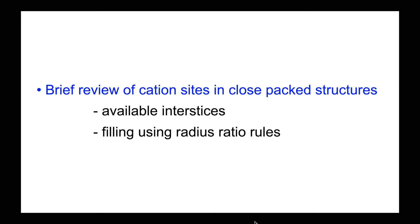We'll begin with a brief overview of the basic principles of ionic structures, and talk about the available interstices in a close-packed anion arrangement, and the filling of those interstices using radius ratio rules.